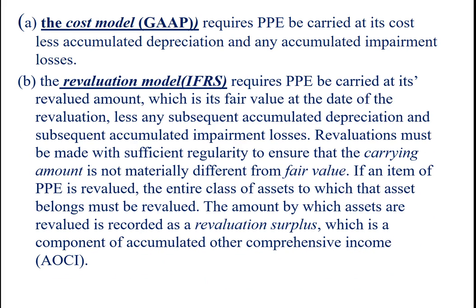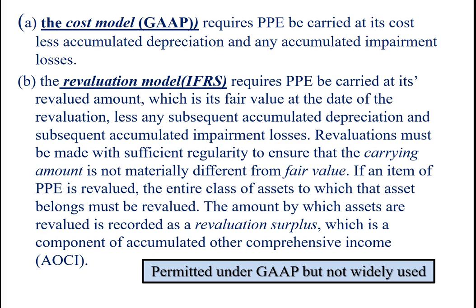The revaluation model under IFRS requires PP&E be carried at its revalued amount, which is its fair value at the date of the revaluation, less any subsequent accumulated depreciation and subsequent accumulated impairment losses. Revaluations must be made with sufficient regularity to ensure that the carrying amount is not materially different from the fair value. If an item of PP&E is revalued, the entire class of assets to which that asset belongs must be revalued. The amount by which assets are revalued is recorded as a revaluation surplus, which is a component of accumulated other comprehensive income. Very few companies use it in the United States, although it is permitted under GAAP.